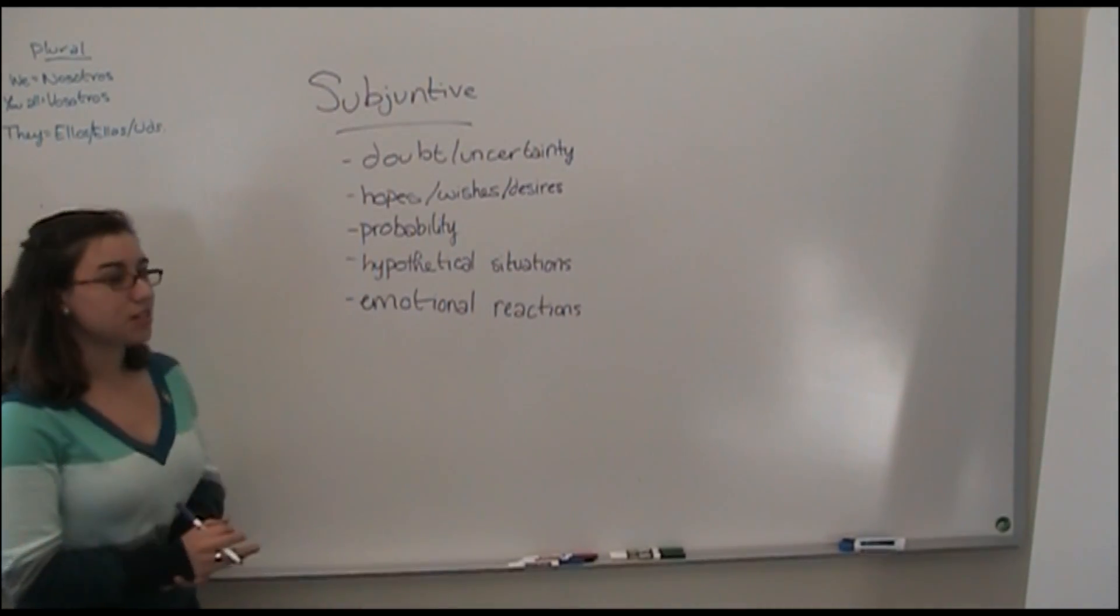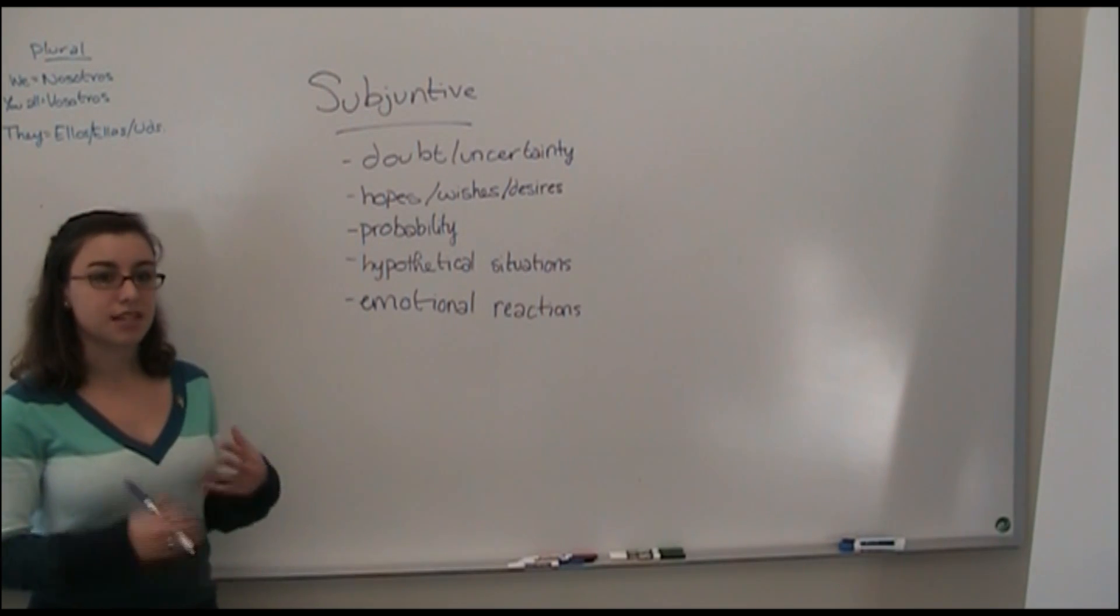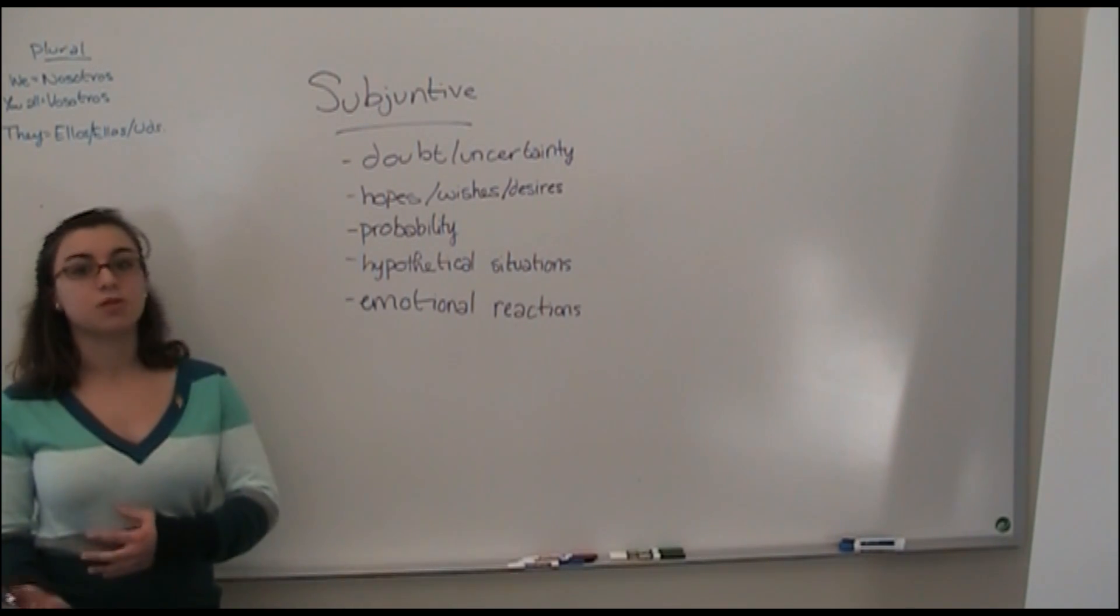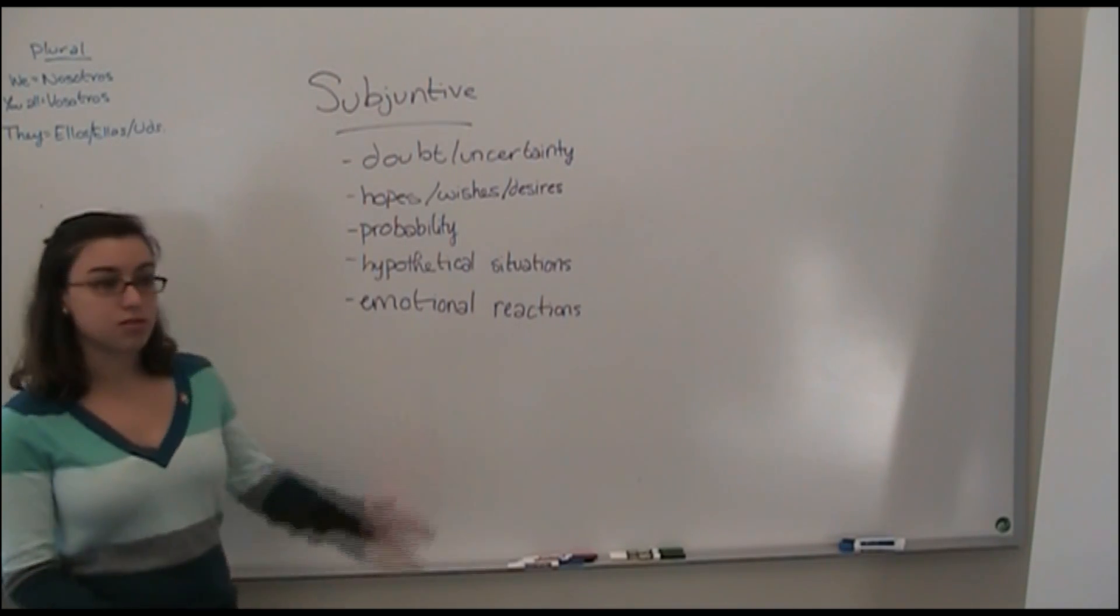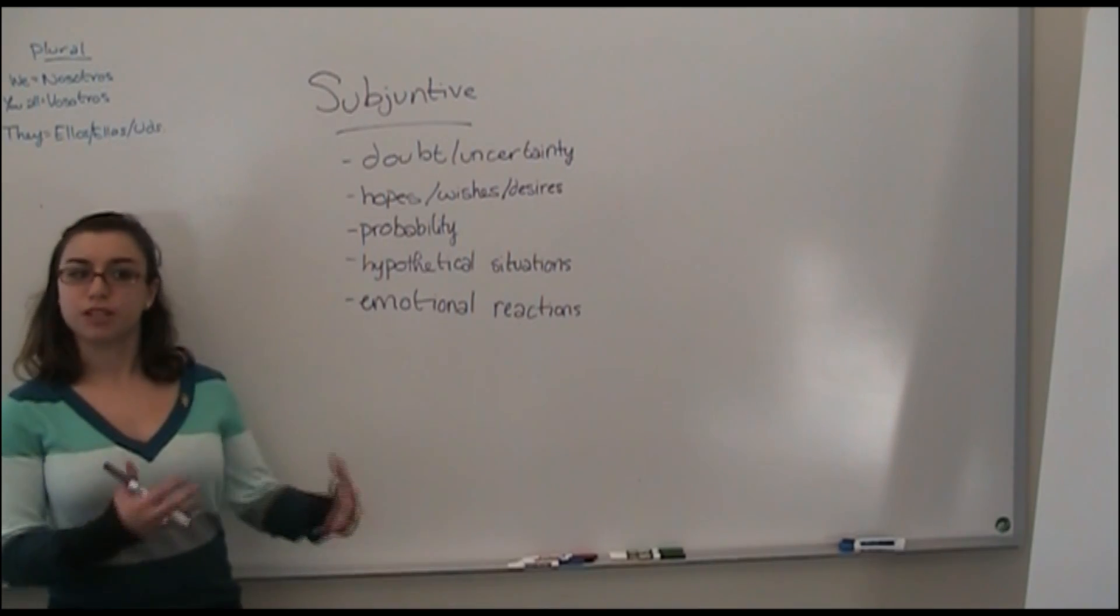Now the reason why a subjunctive is pretty tough is because in English, although we do have a subjunctive, we often use it incorrectly. So it's hard to think of examples of when we would use this in English if we don't really use it correctly.